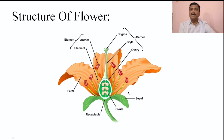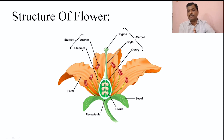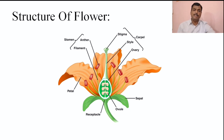The essential whorls of the flower are the androecium and gynoecium. Androecium is the male reproductive whorl and gynoecium is the female reproductive whorl. Androecium is made up of stamens. Each stamen is made up of anther and filament. We will discuss in detail about these reproductive parts at the time of development of male and female gametophytes. Stamens and carpels are the two reproductive parts.